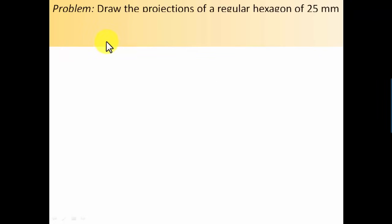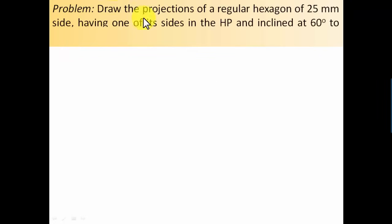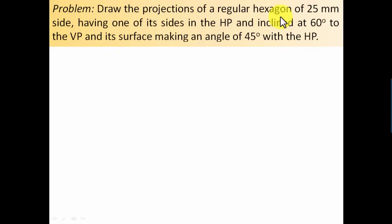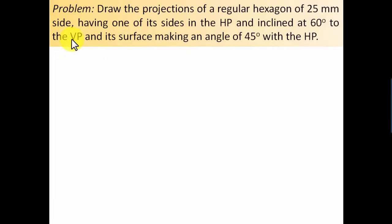The problem goes like this: draw the projections of a regular hexagon of 25 mm side having one of its sides in the HP and inclined at 60 degrees to the VP, and its surface making an angle of 45 degrees with the HP.